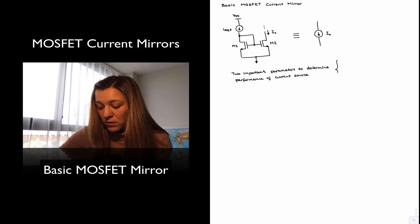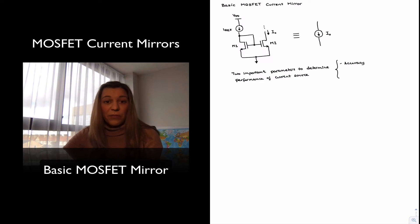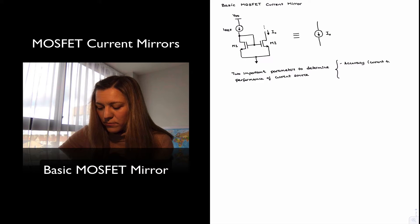And those would be first the accuracy, how close is that I out value to the nominal value that we are trying to design for, and in this case it could be how close it is I out to the reference current, that's the one that we are trying to mirror. That accuracy is also represented by the current transfer ratio, which is the ratio of I out to I ref.